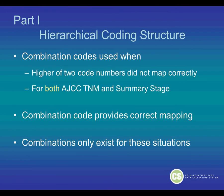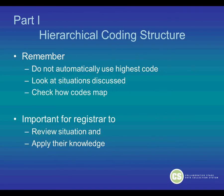Combination codes are used when the higher of two code numbers did not map correctly for both AJCC TNM and Summary Stage. The combination code provides the correct mapping, and the combinations only exist for these situations. Remember, do not automatically use the highest code. Look at the situations discussed and check how the codes map. It's very important for the Registrar to review the specific situation and apply their knowledge to pick the correct code for the correct mapping.